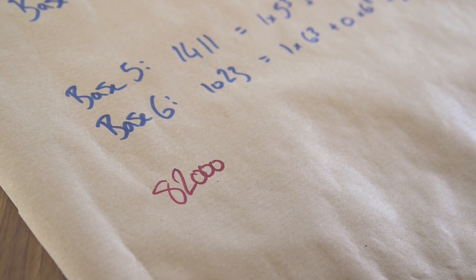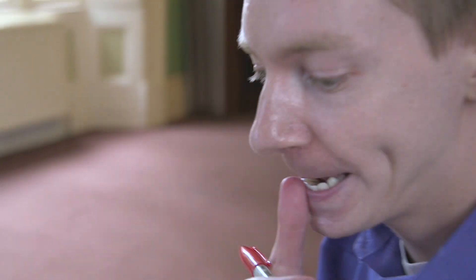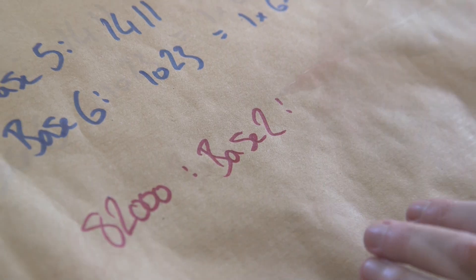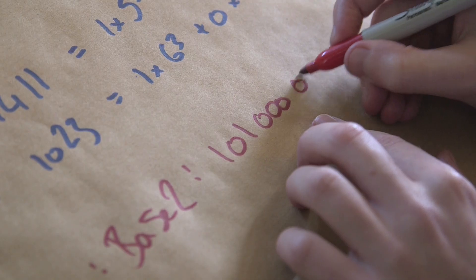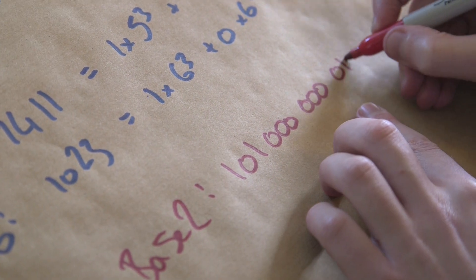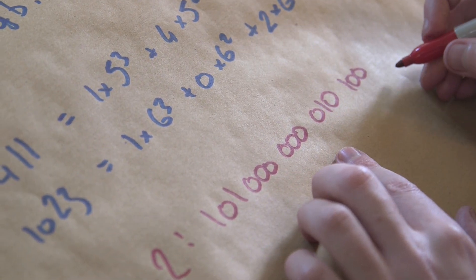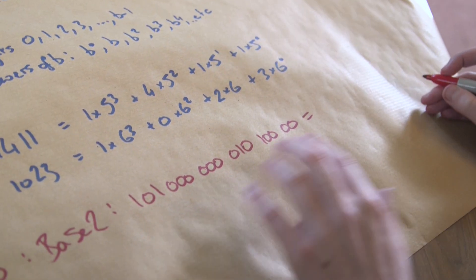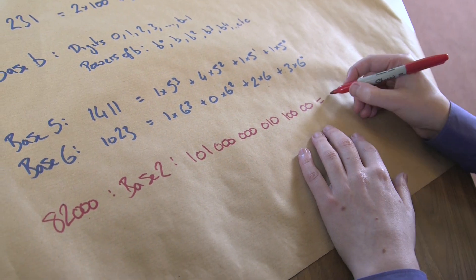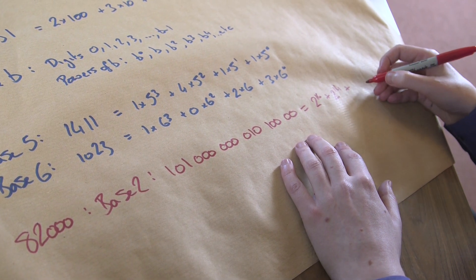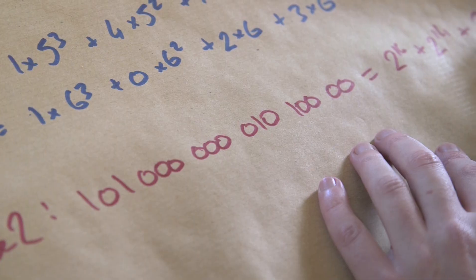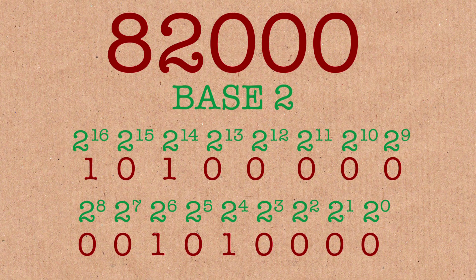Let's do this for 82,000 and see what we get in different bases. Let's start by doing it in base 2 — that's the most simple one you can do. In base 2, it is — and I have to look this up — 1, 0, 1, 0, 0, 0, 0, 1, 0, 0, 1, 0, 0, and a couple more zeros on the end. This means it's 2 to the 16, plus 2 to the 14, plus 2 to the 6, plus 2 to the 4. So that's what it looks like in base 2.